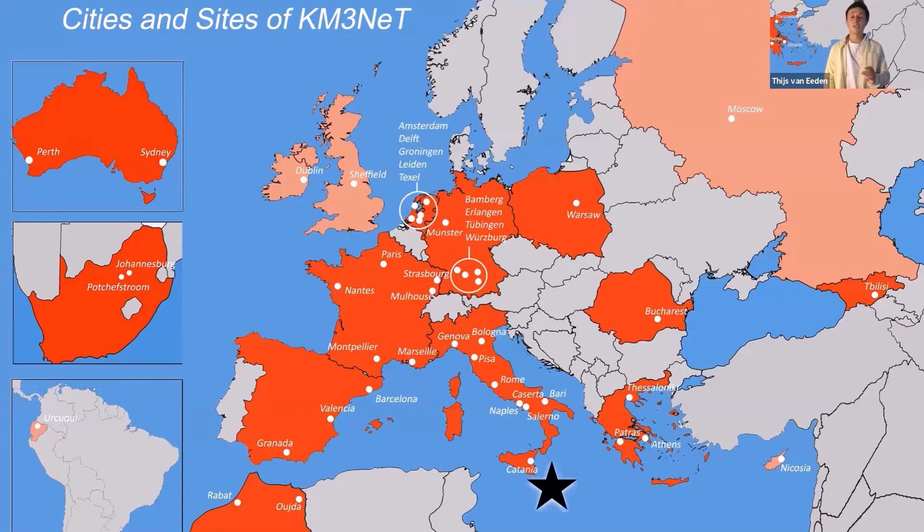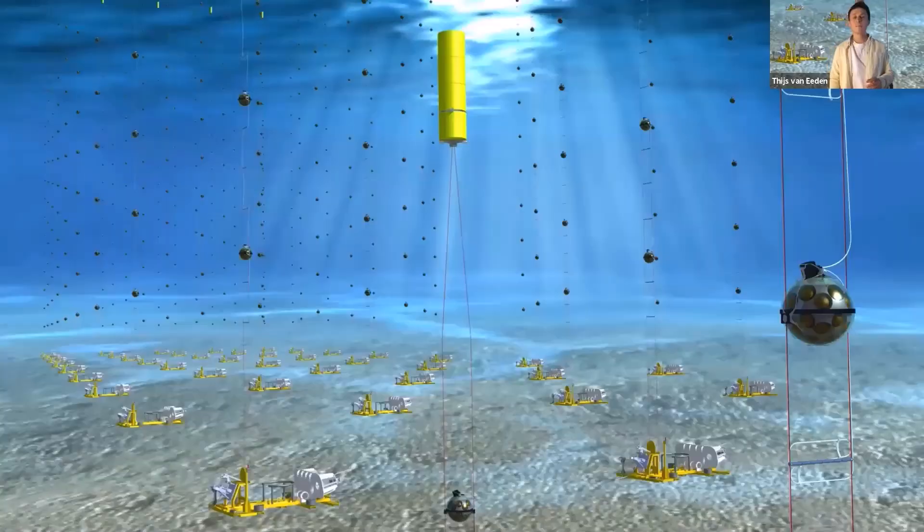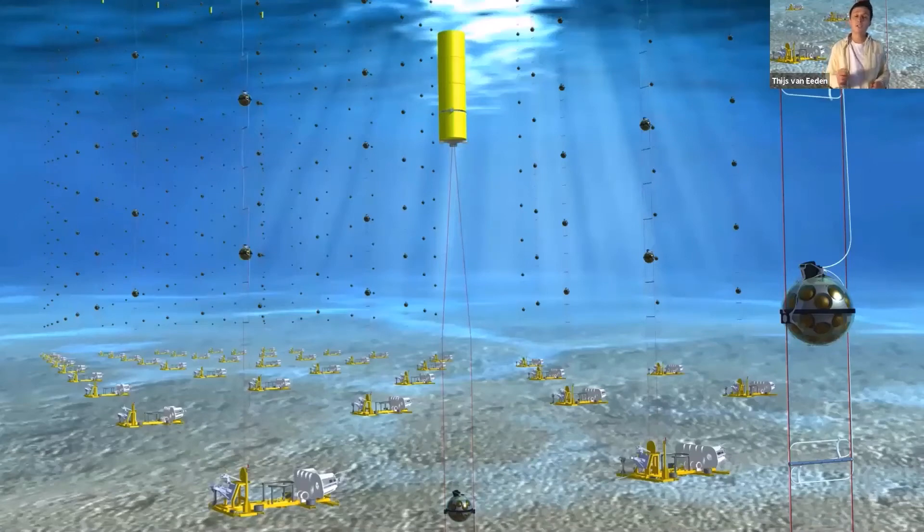If we go below the surface near Sicily, we find our detector at 3.5 kilometers in depth. The detector consists of a cubic kilometer of seawater that's instrumented with very sensitive light sensors. These light sensors are placed within glass spheres.